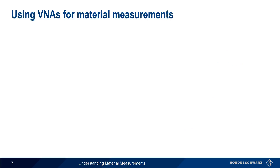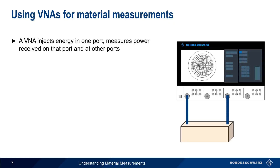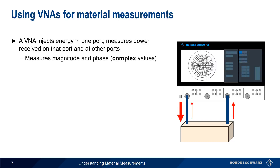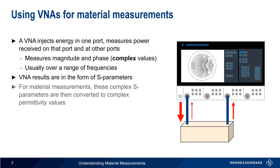One way of obtaining these complex permittivity values is using an instrument called a vector network analyzer, or VNA. A VNA is an instrument that injects radiofrequency energy into one port of a so-called network. It then measures the amount of power reflected back or received on that port, as well as power that appears on any other ports. The measured quantities have both a magnitude and a phase — that is, they are complex or vector values. Measurements are usually made over a range of different frequencies. One of the more common ways of expressing VNA measurement results is in the form of S or scattering parameters. In the case of material measurements, these complex S-parameters can then be converted into complex permittivity values.